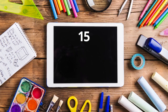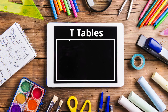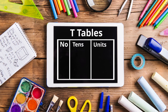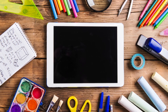From the place value lesson, you know that in 15 there are 5 units and 1 ten, and in 36 there are 6 units and 3 tens. Let's subtract 15 from 36 using a T-table for units and tens. In subtraction, the larger number is written first and then the smaller number is written below it. T column U, where U represents units and T represents tens: 3 column 6 — 6 units and 3 tens in 36, minus 1 column 5 — 5 units and 1 ten in 15, giving 2 column 1.